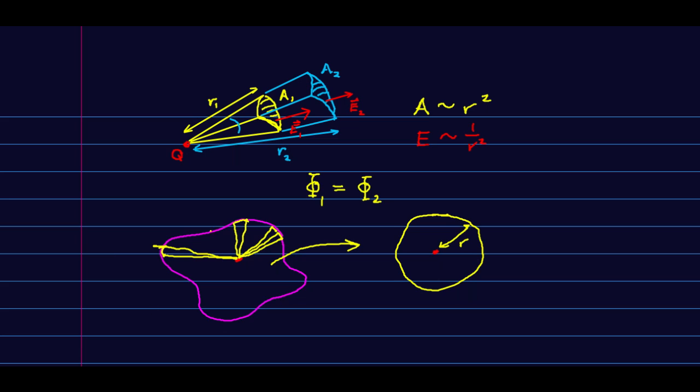And that means that no matter what shape I make this surface, the flux is going to be the same. It's still going to come out as q over epsilon naught, just like it did before.